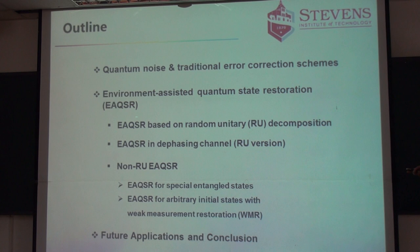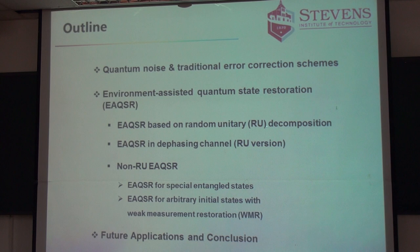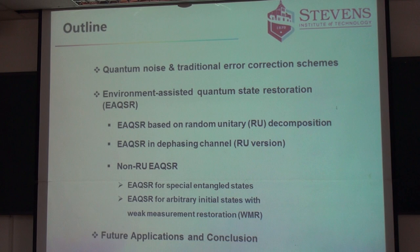The first one is called random unitary decomposition. We call it EAQSR — environment-assisted quantum state restoration — by using this special technique. Physically, it's called random unitary decomposition. I will also show a special case, the limitation of this random unitary decomposition technique, and why we can extend it to multiple qubits. Because for quantum computing, we're not just interested in one qubit or two qubits — essentially we're interested in thousands of qubits. That's why we have to consider the high-dimensional case.